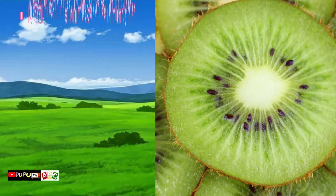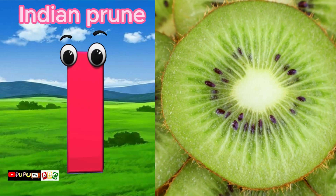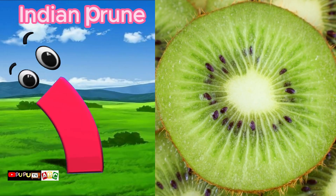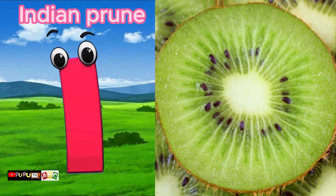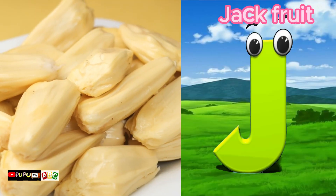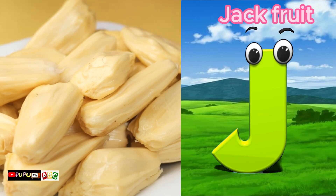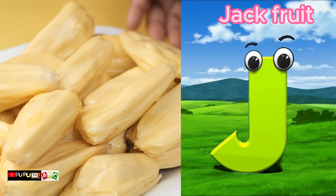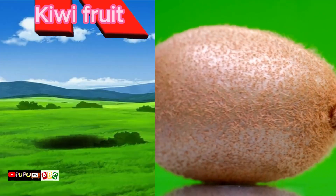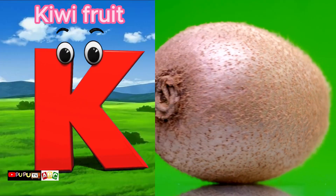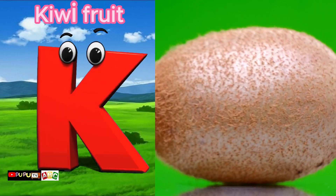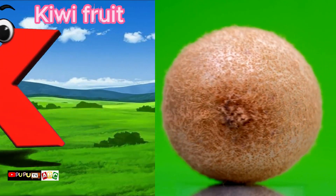I is for Indian Prune. I-I-Indian Prune. J is for Jackfruit. J-J-Jackfruit. K is for Kiwifruit. K-K-Kiwifruit.